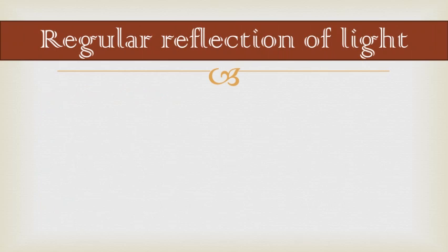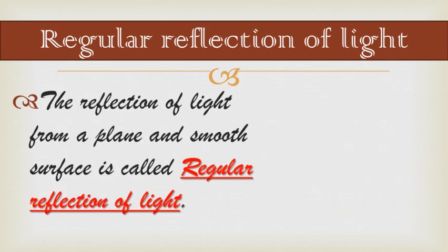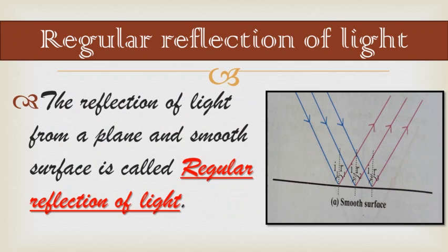Today we shall learn about regular reflection of light. The reflection of light from a plane and smooth surface is called regular reflection of light. On a smooth surface, the incident rays (shown in blue) and reflected rays (shown in pink) are parallel to each other.